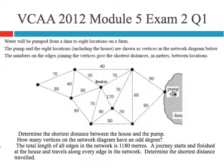The numbers on the edges joining the vertices give the shortest distance in metres between the locations. So the 3 questions were asked to begin with: determine the shortest distance between the house and the pump, how many of the vertices on the network have an odd degree, and the total length of all of the edges in the network is 1,180. A journey starting and finishing at the house, travelling along each edge in the network once, determine the shortest distance travelled.